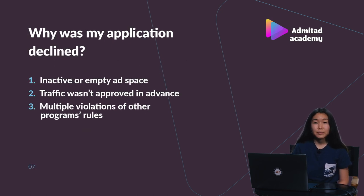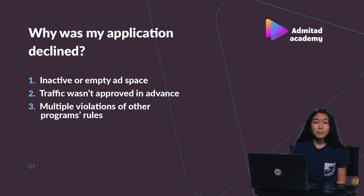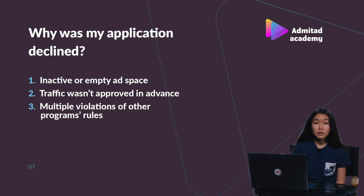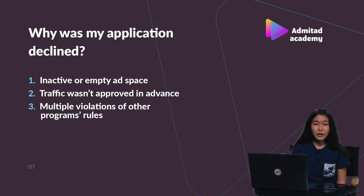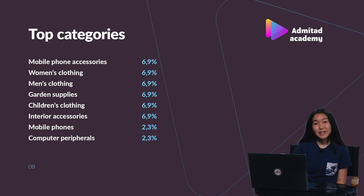You applied to join the program but after some time you see that your application was declined. Why did it happen? Even if your ad space belongs to allowed types of traffic, we cannot approve inactive or empty ad space. So before you apply for the program, please make sure that your website is fully functional and everything works properly. We can decline your application if you do contextual advertising but you didn't contact us through the ticket system or your personal manager to request approval. And even if you did, we can refuse to connect you to the program if you violated the rules of other Admitad programs. We can open the publisher's profile and if we see a lot of tickets from other managers complaining that this publisher is brand bidding, we are not going to let you join the program.